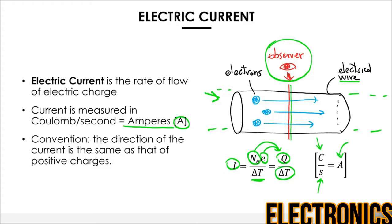There is a very important thing to remember: the convention for the direction of the current. The general convention is that the direction of the current is the same as the direction of movement of positive charges. Given that in electric circuits and wires what actually moves are electrons — which have a negative charge — the direction of the current is the opposite of the movement of the electrons. So if electrons move from left to right, the current direction will be from right to left.